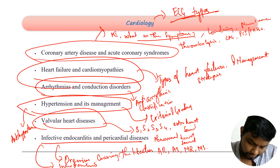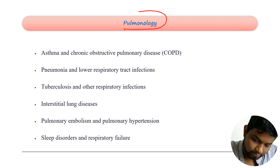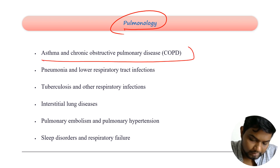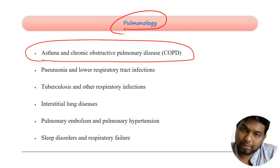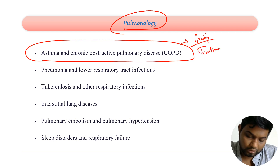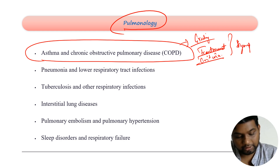Moving on to pulmonology: the main disease you should not leave a single point on is COPD and asthma. You have to remember the grading of asthma, treatment strategy, named or unnamed criteria, symptoms and pathogenesis — these are pretty high yield areas.